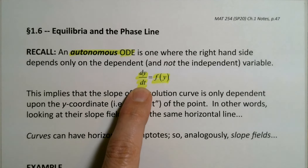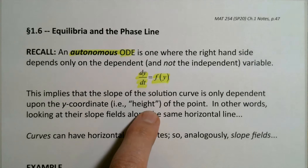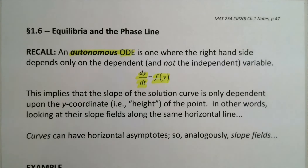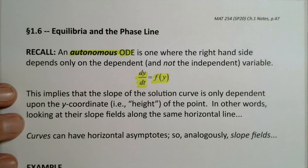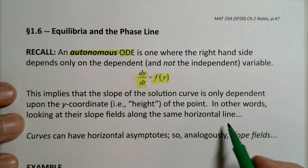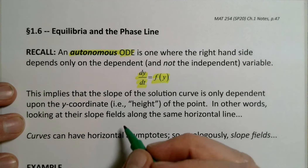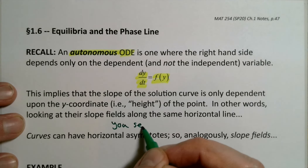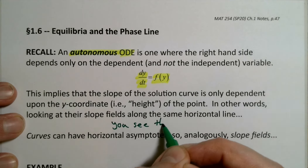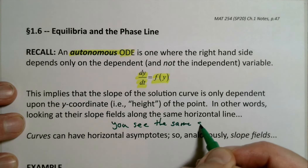So if you want to know the slope of the solution curve, all you have to do is report what the height is, and that'll give it to you. That means that if you're looking at an autonomous differential equation and looking along the same horizontal line, you're going to see the same slope value.